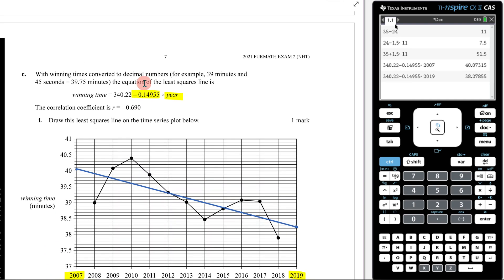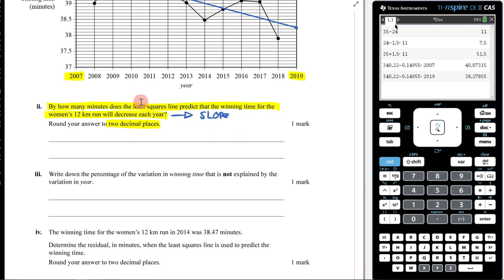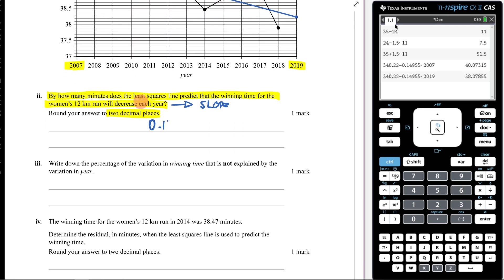So if we come here, this is my slope right there. So if I was to round that to two decimal places, it's going to be 0.15 minutes.